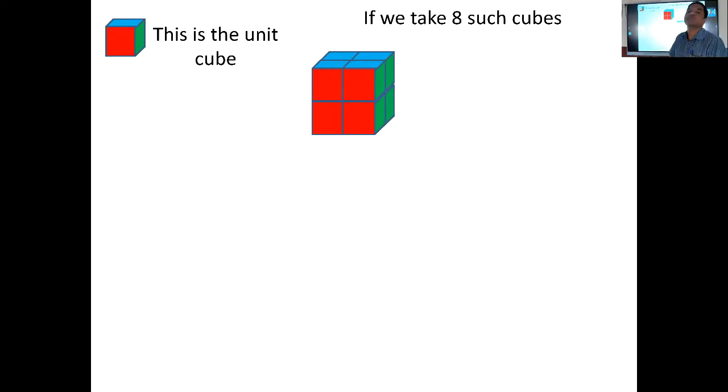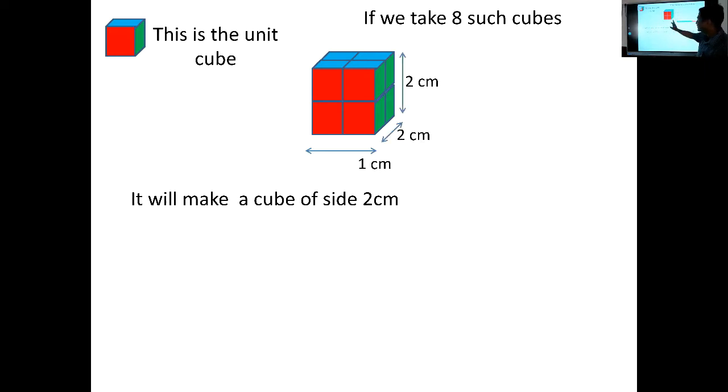What is the side of this cube? What is the length of the side of this cube? Definitely, this will make a cube of side equal to 2 centimeters, because one cube is of 1 centimeter. So the side of this cube will be 2 centimeters. Whether you take length, breadth, or height, it will be 2 centimeters.